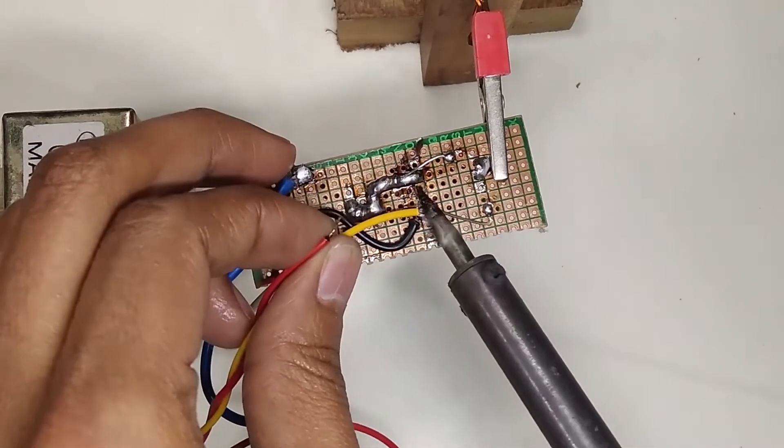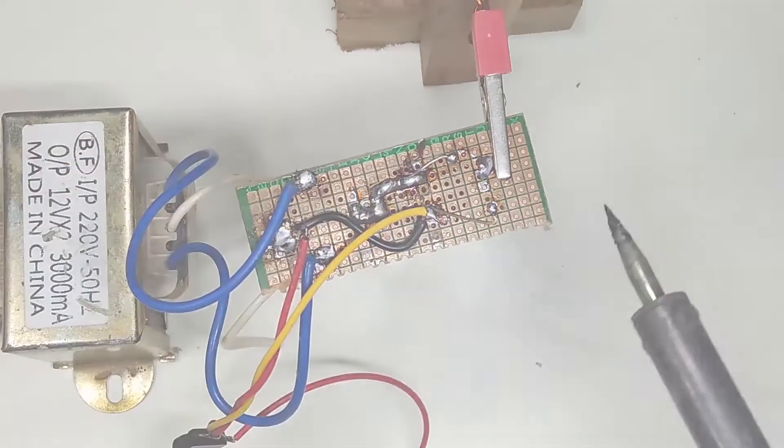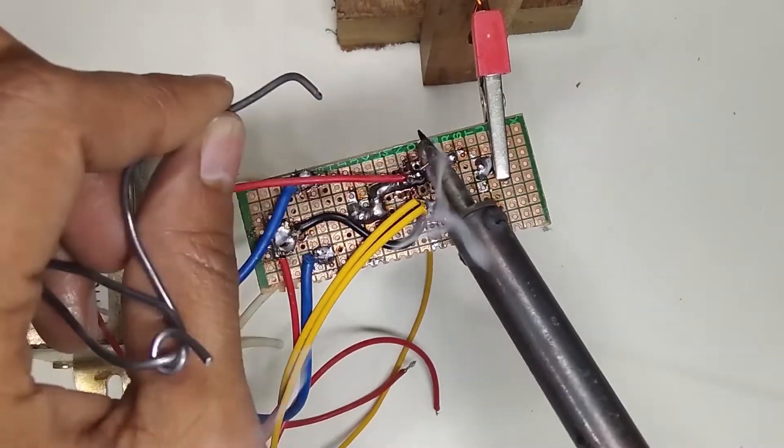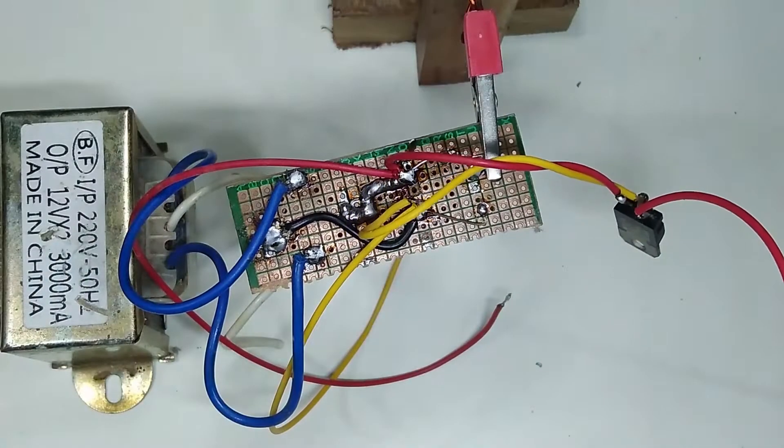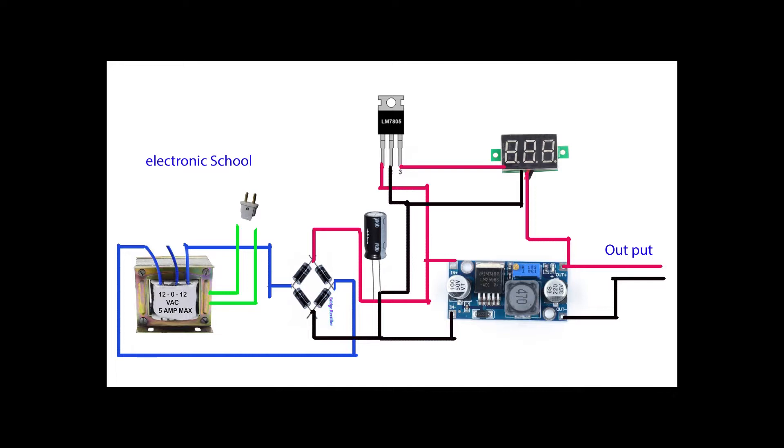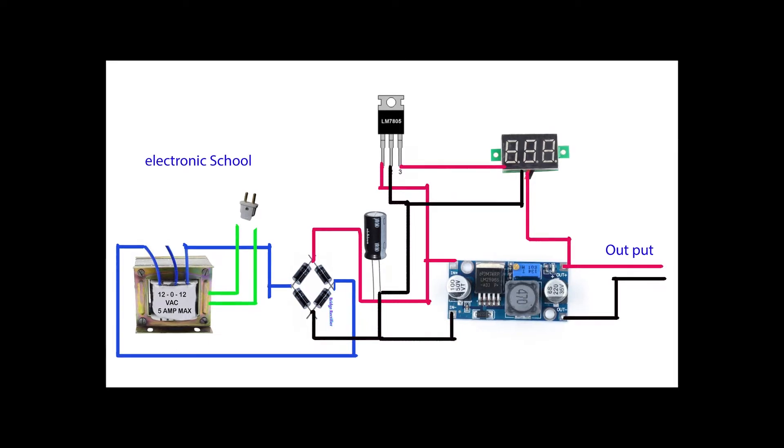The output voltage of rectifier is the input voltage of the buck converter. And the output voltage of the buck converter is the input voltage or excitation voltage of our external load and the display. This diagram will help you to understand the process how to make it.